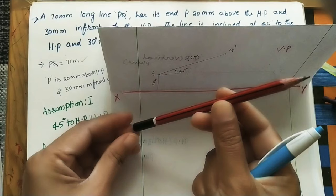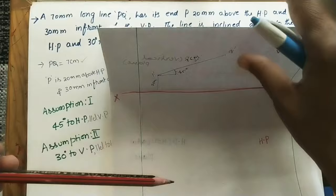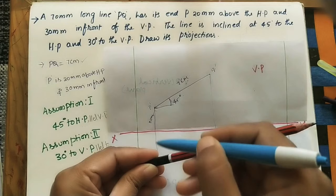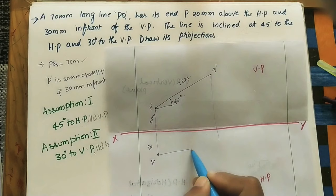In the top view for the first assumption, the inclined line appears as a horizontal line. The line is 30 mm in front of the VP, so we mark the top view at 30 mm below the XY line. We draw projector lines from Q' to obtain the top view. The length PQ in the top view is less than the true length.